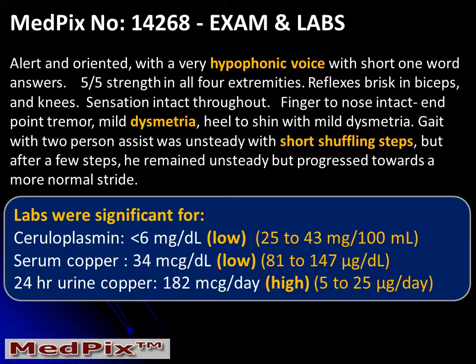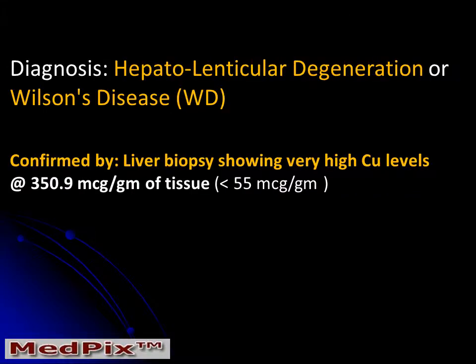We want to add some very important lab values. Ceruloplasmin was low, serum copper was low, and the 24-hour urine copper was high. Obviously, someone was thinking about an error of copper metabolism or Wilson's disease. The diagnosis in this case is hepatolenticular degeneration or Wilson's disease, which was confirmed by a liver biopsy showing very high copper levels.